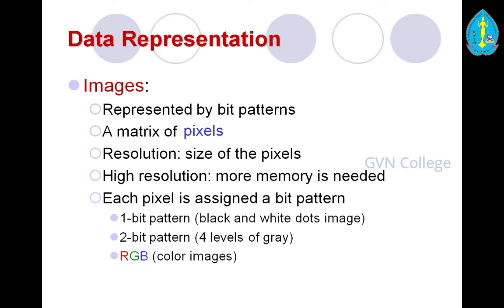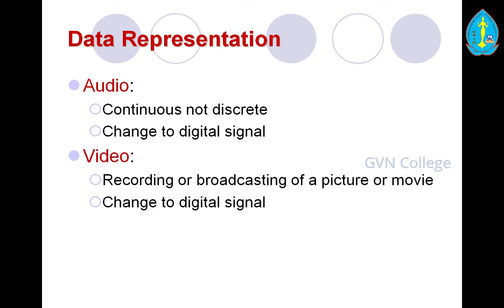The next level is RGB, which is used for color images. Audio is continuous, not discrete data, and it is changed to digital signals — converted from analog to digital. Video is the recording or broadcasting of pictures or movies, also changed to a digital signal.